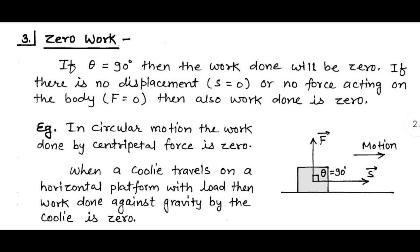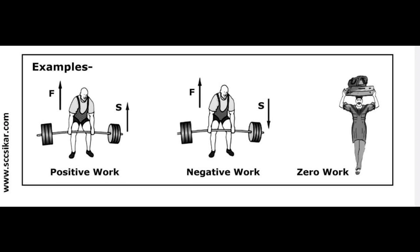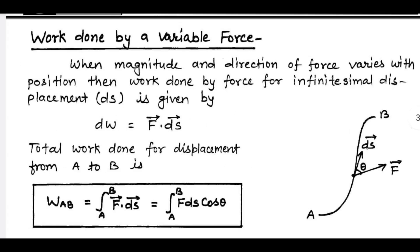To summarize: for positive work, force and displacement are in the same direction; for negative work, force and displacement act in opposite directions; for zero work, either the force is zero or the displacement is zero. Now, when a variable force acts on an object causing displacement, the work done by the variable force is given by dW = F⃗ · ds⃗. We use ds⃗ because we are considering very small displacements.